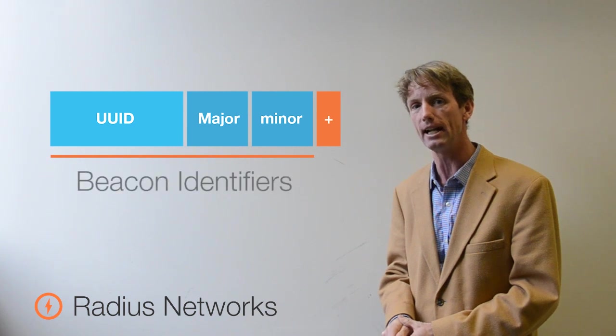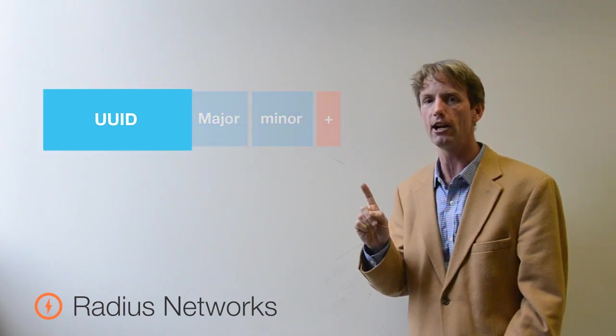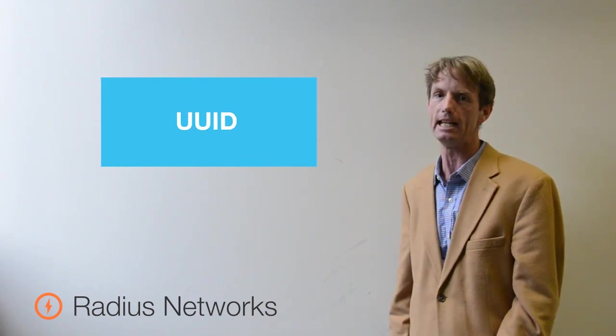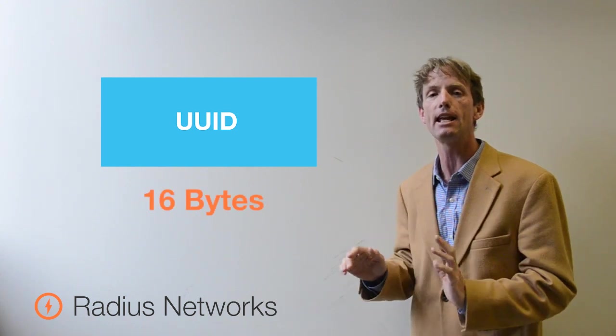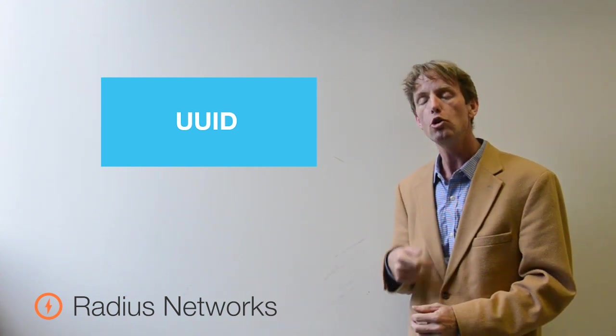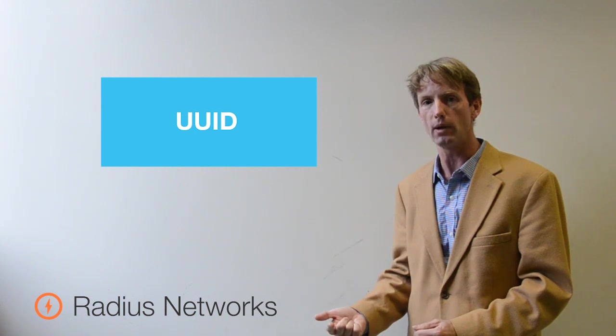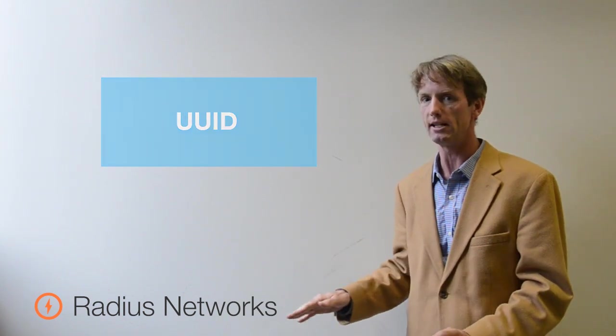The first three are used for the beacon identifiers. The first identifier is called the proximity UUID. This is used to be the same thing for your entire organization or company generally. You make one of these with a UUID generator, and you don't have to register it with any central authority.